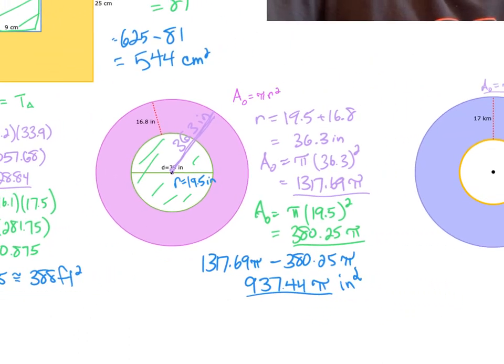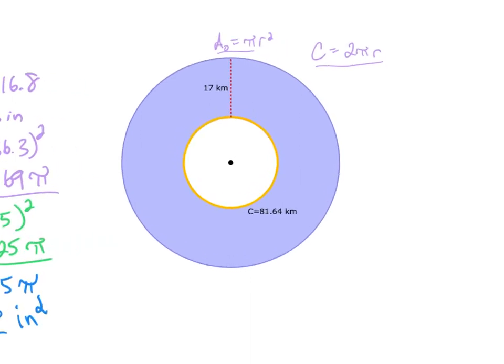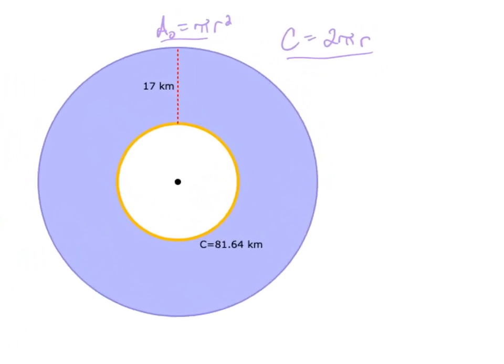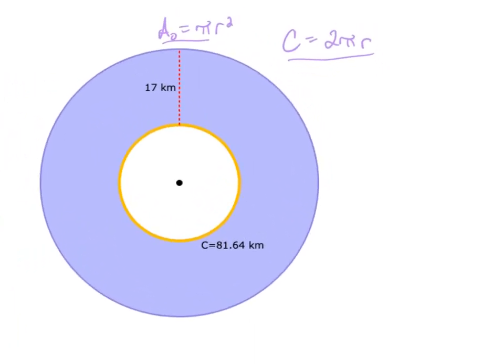We've got one more here. This one, this little curveball here, where they haven't given us our radius. They've given us the circumference. And that circumference is my C. So I'm just going to plug this in and try to solve for my radius. So 81.64 kilometers equals 2 times pi r.